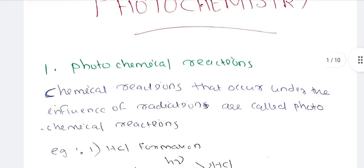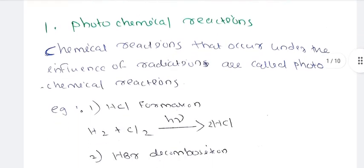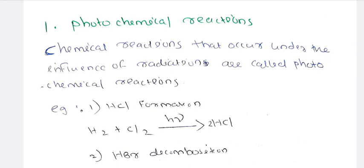We are discussing these topics including derivations. First, we are talking about photochemical reactions. A photochemical reaction is a chemical reaction that occurs under the influence of radiation. These are called photochemical reactions.